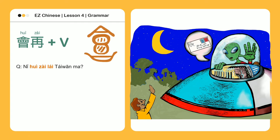再来 — To come again/To come back. 你会再来台湾吗? — Will you come back to Taiwan? 我很喜欢台湾，我会再来 — I like Taiwan very much, so I will come back.